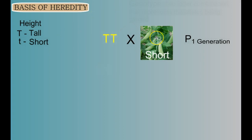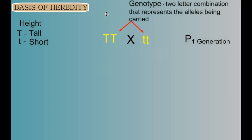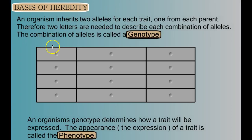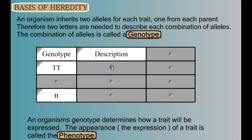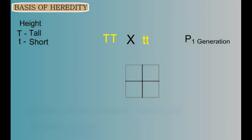Our original parent plants can be represented by two-letter combinations: TT for the tall plant and tt for the short plant. This two-letter combination representing the alleles present is called the genotype. We describe these two genotypes — TT and tt — with the descriptive terms homozygous dominant and homozygous recessive. The genetic expression — what we see when we look at the plant — is otherwise known as the phenotype. In this case we would see a tall plant, and in this case a short plant.